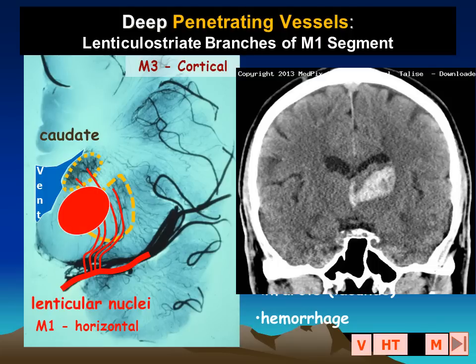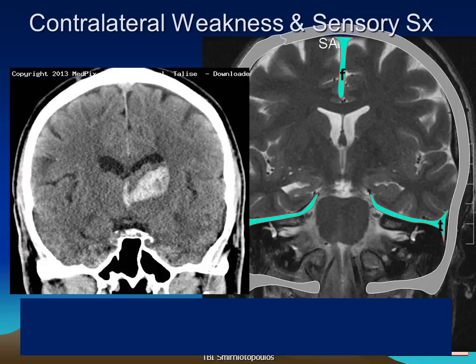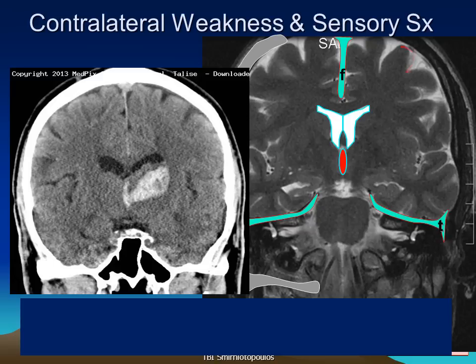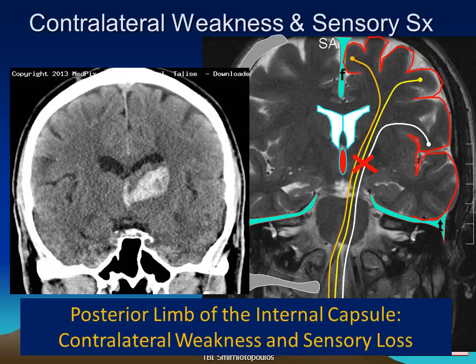In our patient, we had a rupture of a small vessel supplying the thalamus. The contralateral right-sided weakness is explained by the decussation of the corticospinal tracts in the brainstem — the patient's left hemisphere controls the right side of the body. So a lesion in this location is perfectly consistent.